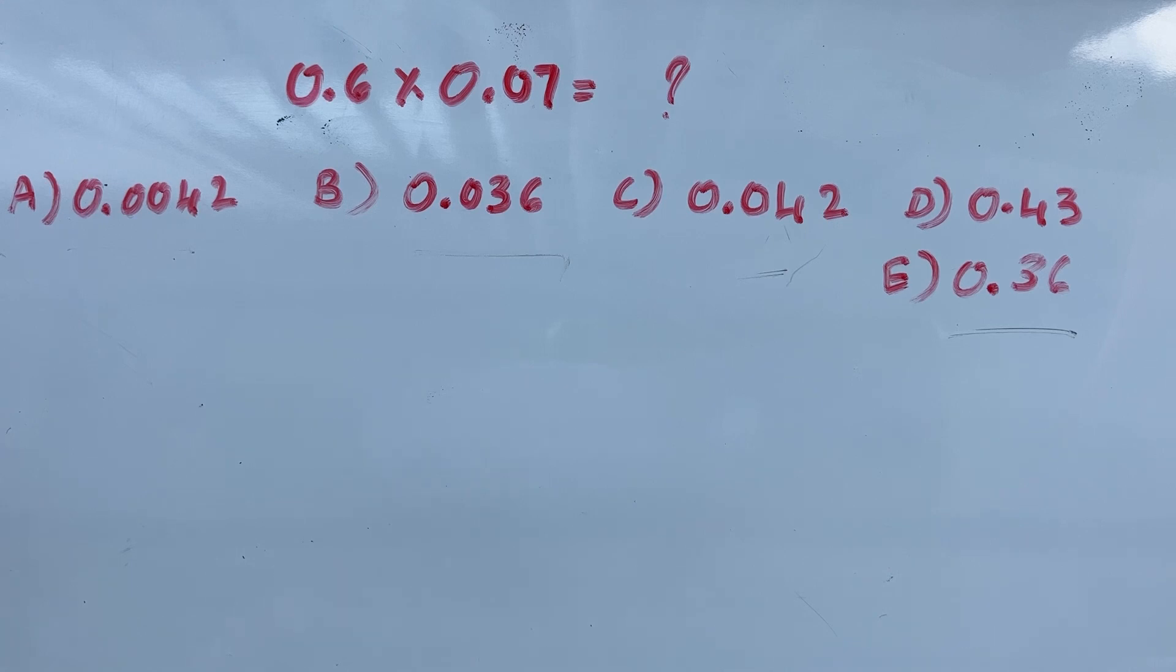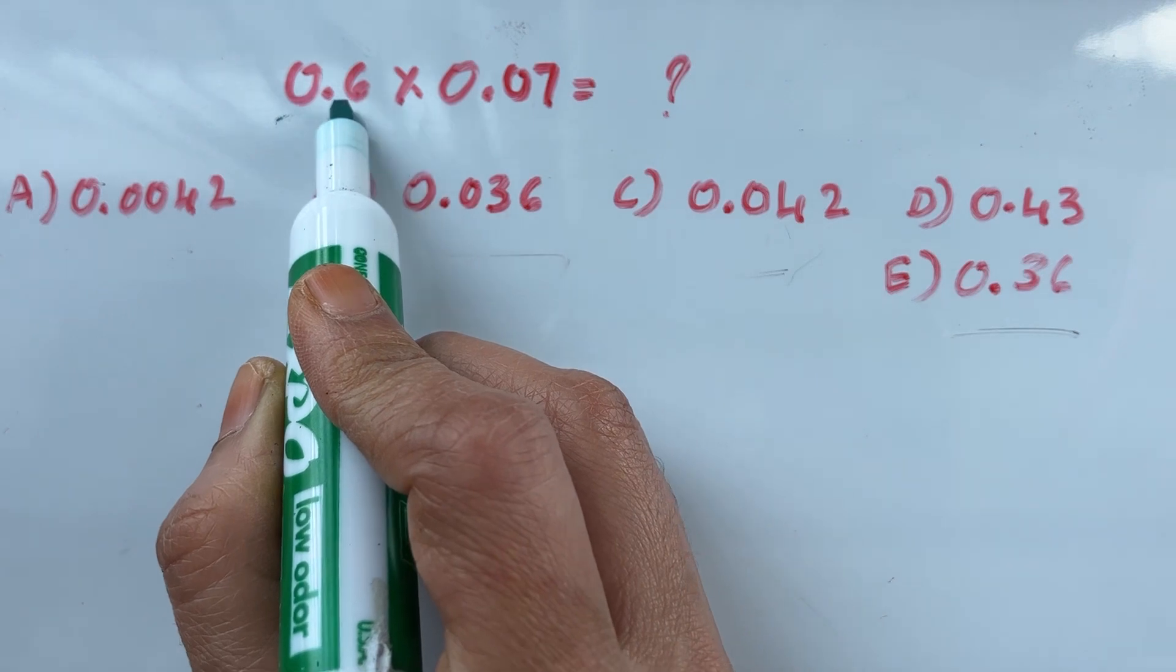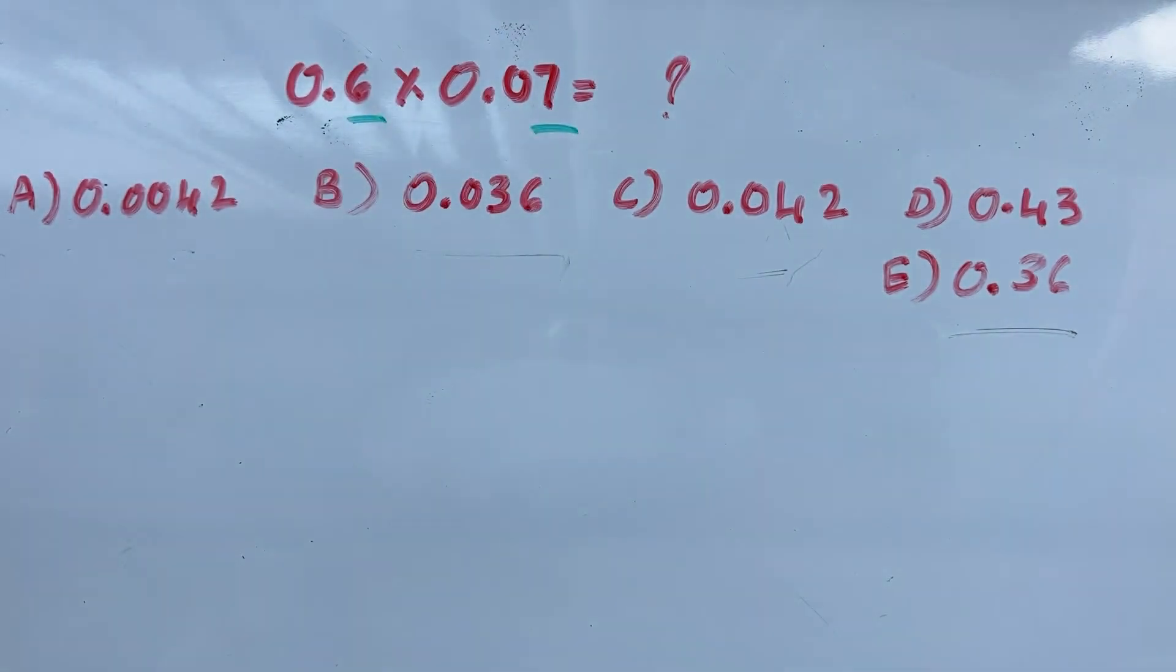How to find 0.6 times 0.07? It's very simple. First, you have to multiply 6 and 7. Six times seven - what is six times seven? Forty-two. Next step: where to put the decimal point?